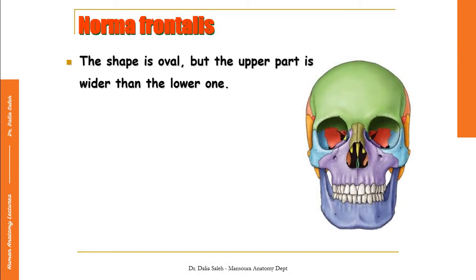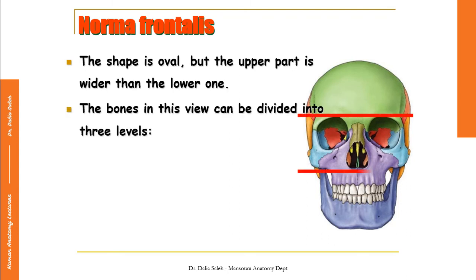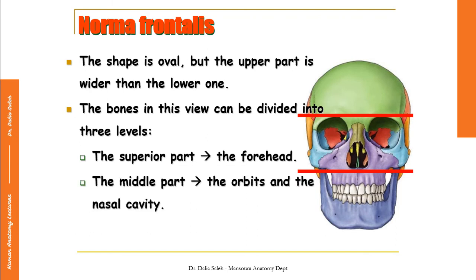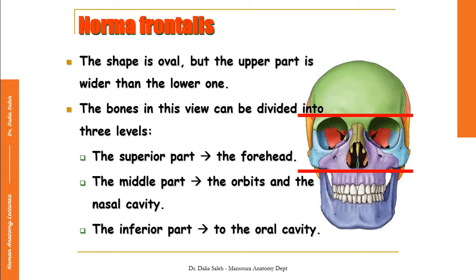For the norma frontalis, the shape of the skull is almost oval, but its upper part is wider than the lower part. We can divide the norma frontalis into three regions by two lines: the superior part is formed by the forehead, made of the frontal bone; the middle part contains the two orbits and the nasal cavities; and the lower part contains the oral cavity. We will discuss the details of the norma frontalis further in another video.